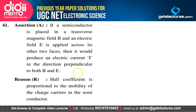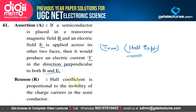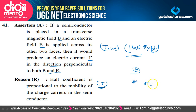If a semiconductor is placed in a transverse magnetic field B and electric field E is applied across its two faces, it produces an electric current I in the direction perpendicular to B — true. This is the basic definition of the Hall experiment. Hall coefficient is proportional to the mobility of charge carriers — also true, since conductivity σ = μ/RH, so RH is proportional to μ. However, R is not the correct explanation of A. Option B is correct.